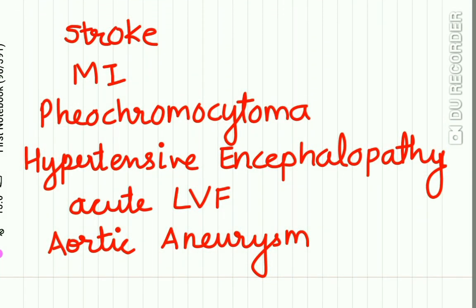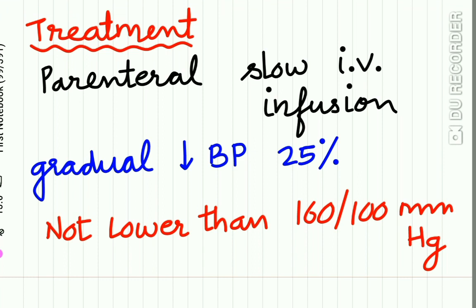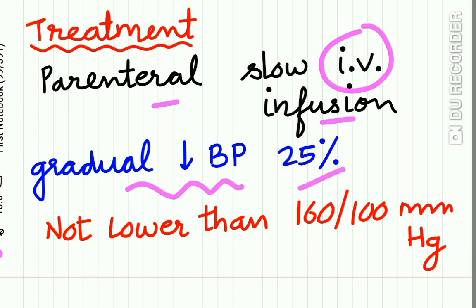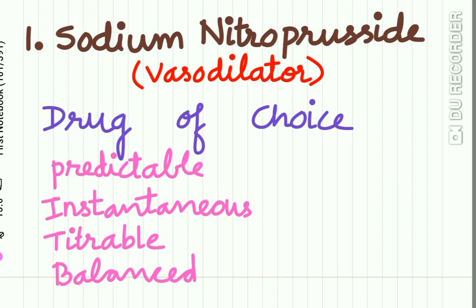Hypertensive emergency and urgency conditions include stroke, MI, pheochromocytoma, hypertensive encephalopathy, acute LVF, and aortic aneurysm. Treatment involves parenteral route of drug administration — IV infusion done very slowly. There should be a gradual fall in BP by 25 percent, and you should not lower the BP more than 160/100 mmHg.